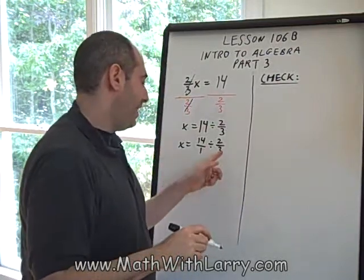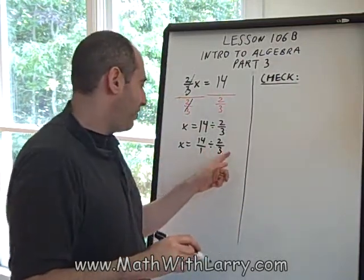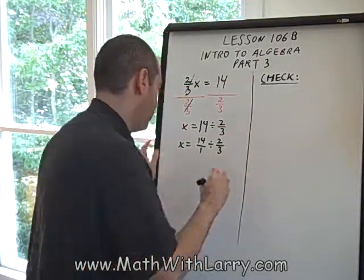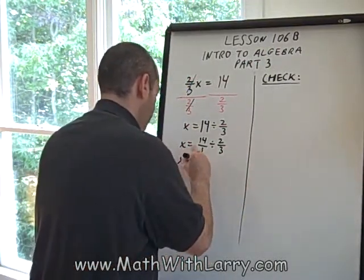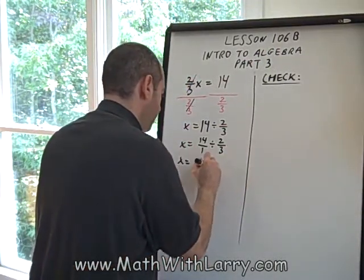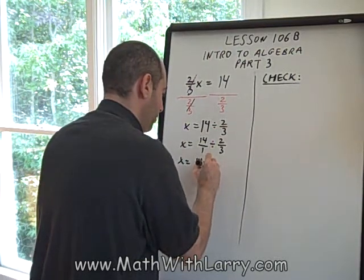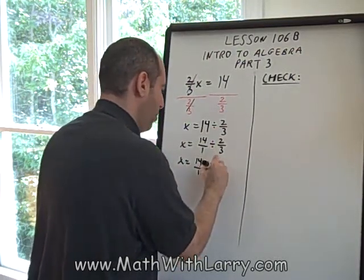Now, hopefully you remember how to handle this. To divide by a fraction, you multiply by the reciprocal of the fraction. So now we have x equals 14/1 times, remember our middle dot is times, 3/2.